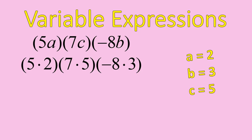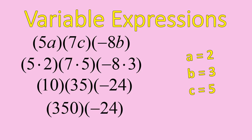I'll go ahead and solve our first step. I'm going to simplify everything inside of parentheses. 5 times 2 is 10. 7 times 5 is 35. And negative 8 times 3 gives me negative 24. Now I'm going to solve the rest of my multiplication, starting at the left and moving to the right. 10 times 35 is 350.